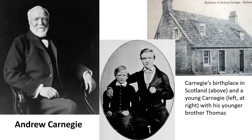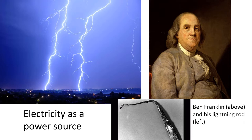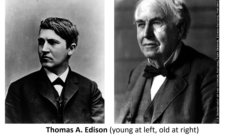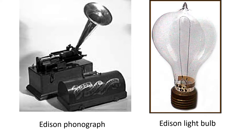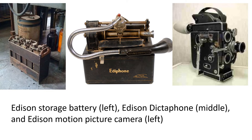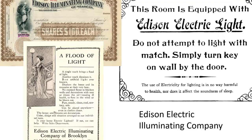If machines were made of steel, electricity was a power source that people were starting to use. Electricity has been around in nature and they've been trying to figure out a way to really use it for a long time — think of Ben Franklin and his famous lightning rod. In the late 19th century, the person who really figured out a way to make electricity useful was Thomas Alva Edison. You think of Edison inventing the incandescent light bulb, but he put electricity to use in many new inventions like the phonograph, the storage battery, the dictaphone, and the motion picture camera.